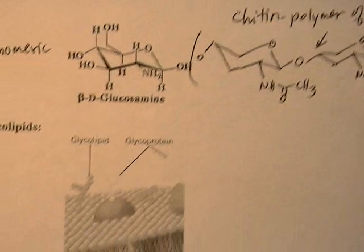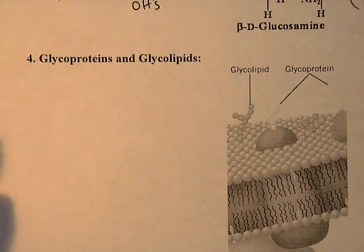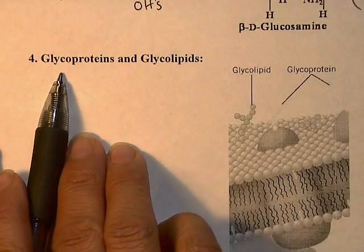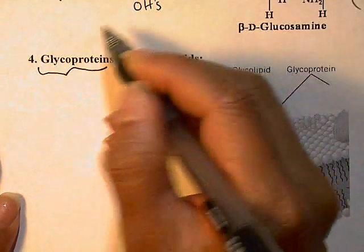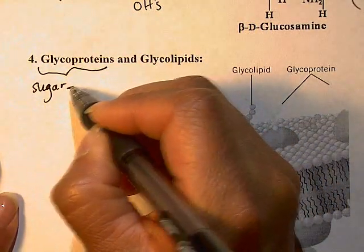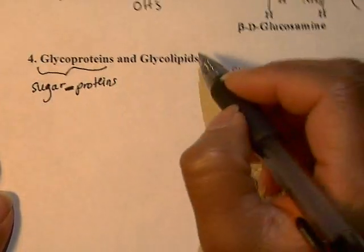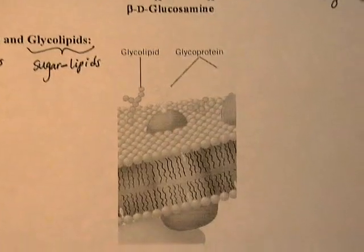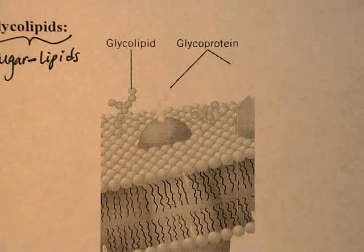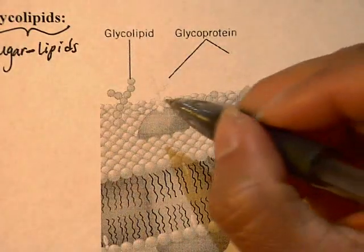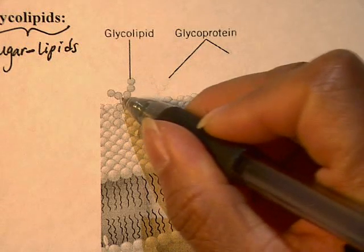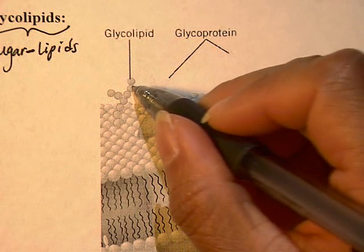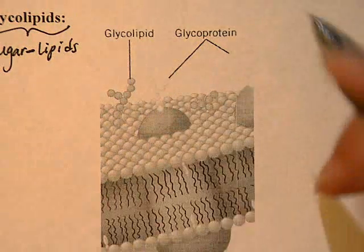The last important sugars I want to cover are glycoproteins and glycolipids. Anytime you see 'glyco,' that's referring to the sugar portion. So a glycoprotein is a sugar chemically linked with a protein, and a glycolipid is a sugar linked with a lipid. In a cell lipid bilayer, glycolipids have sugar units — each circle representing a monosaccharide — sticking out of the cell surface.